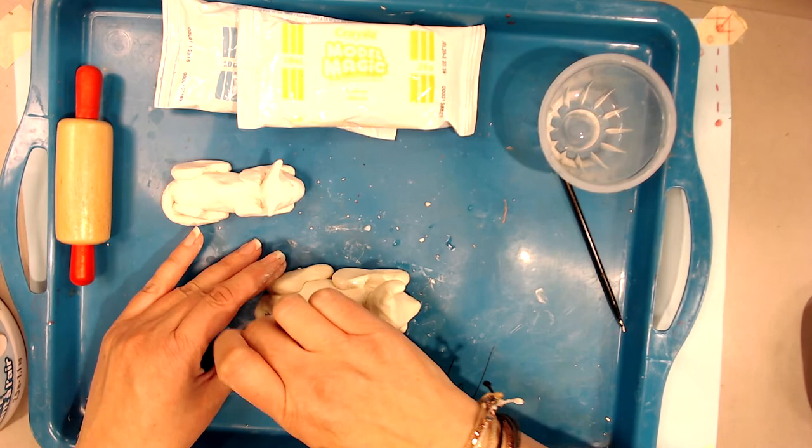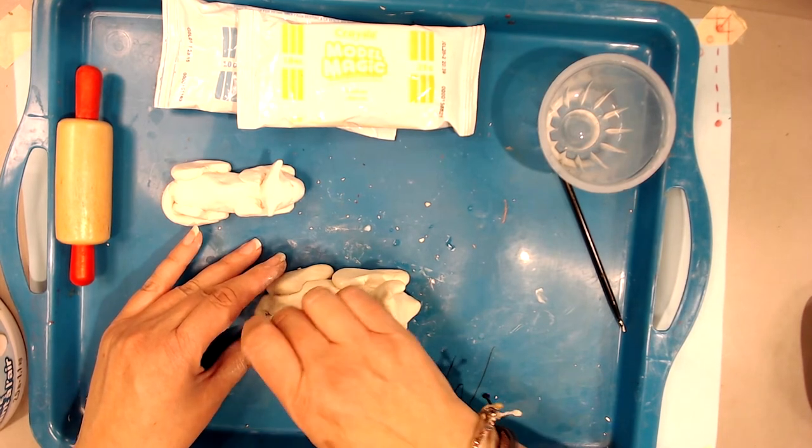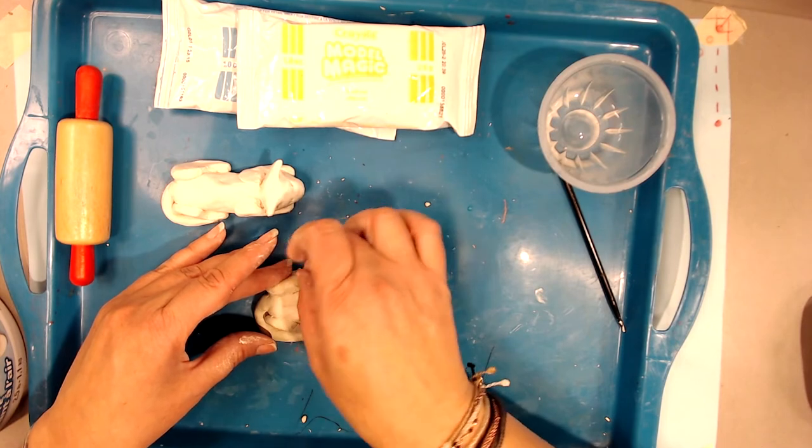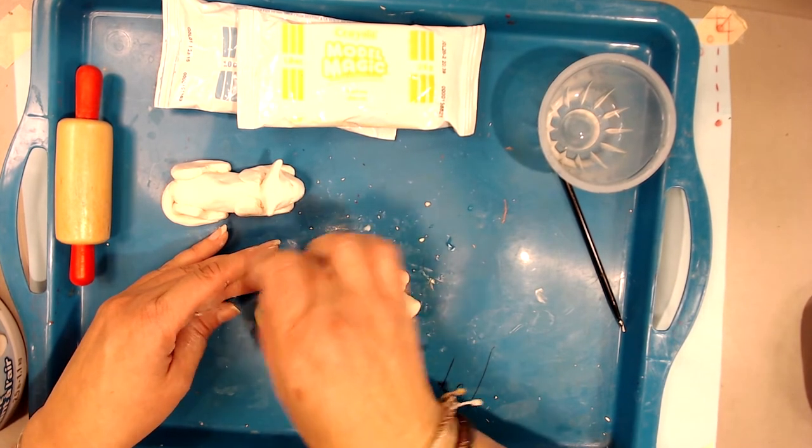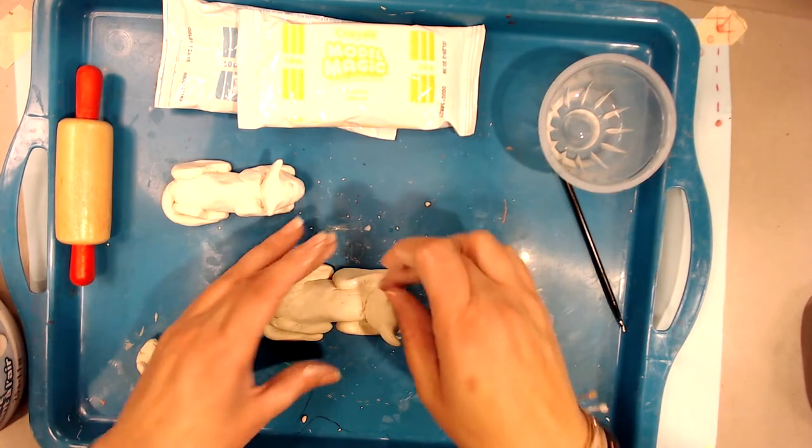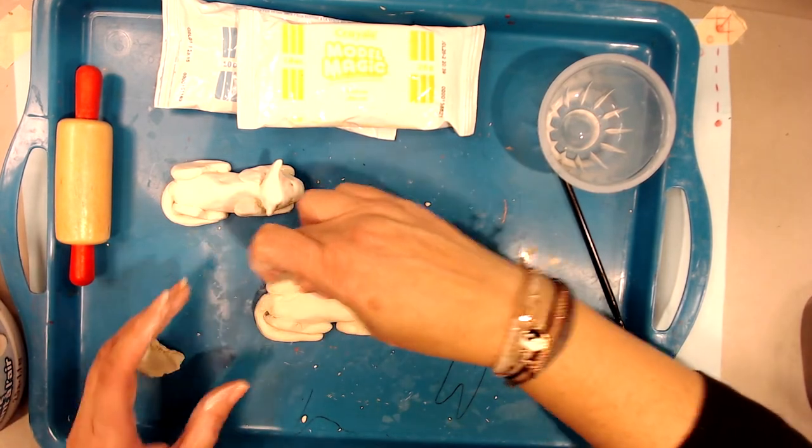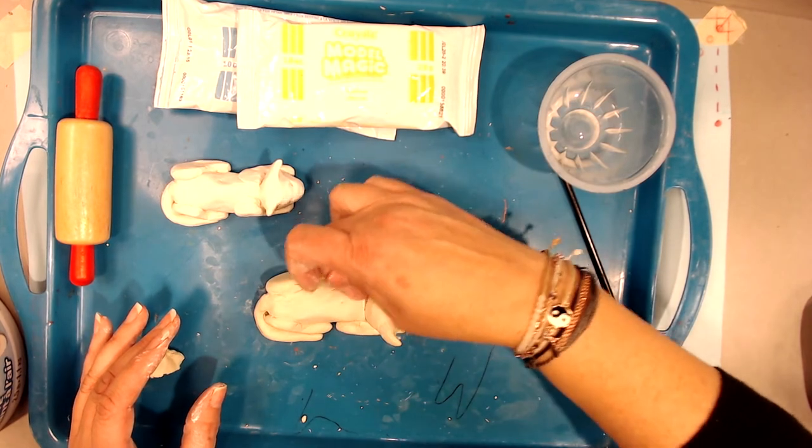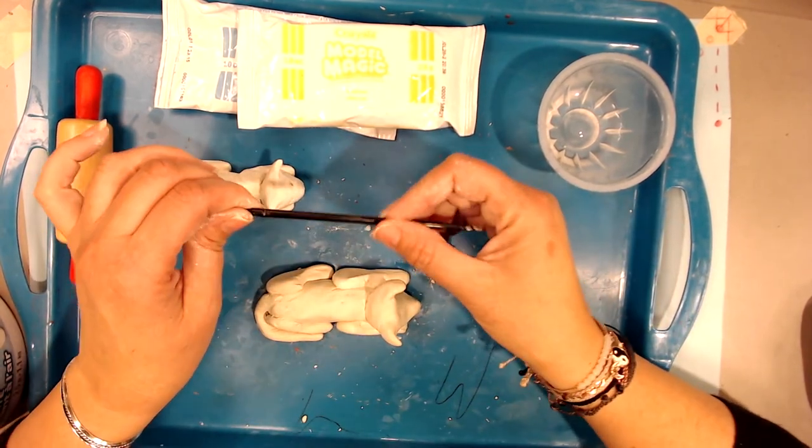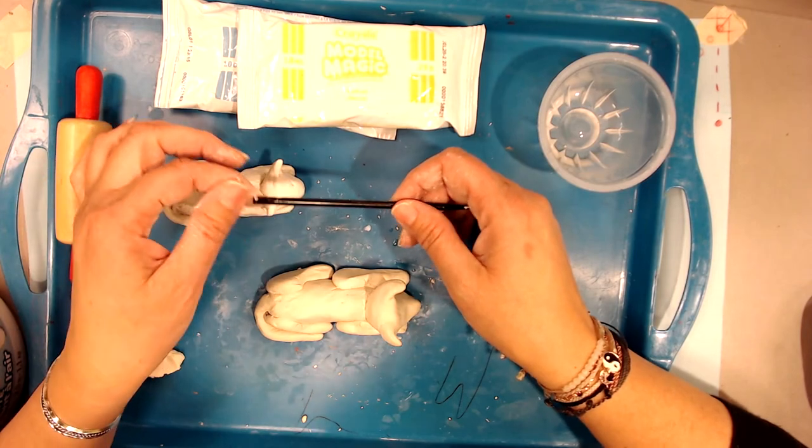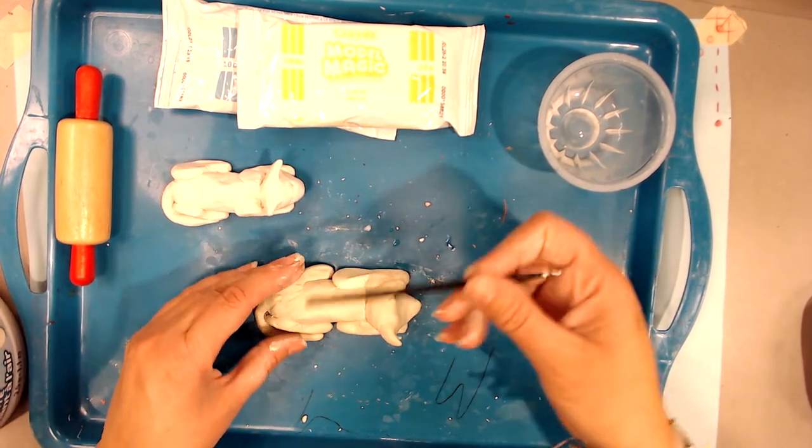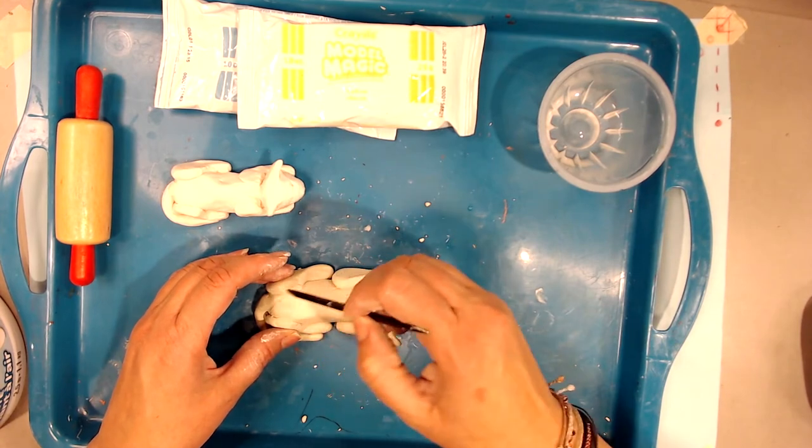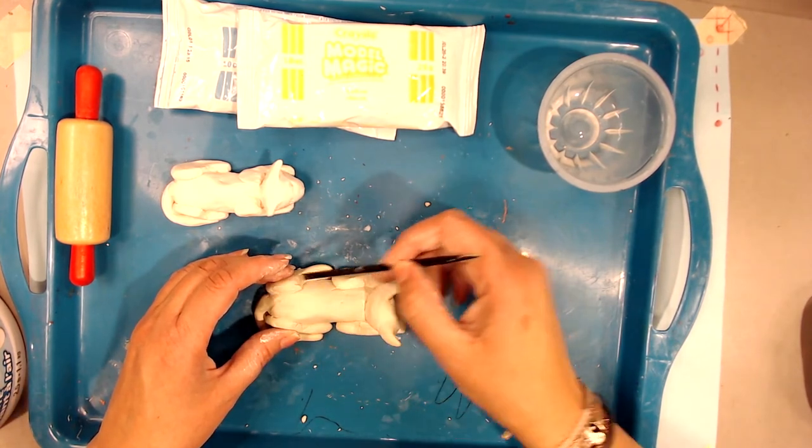Once I have him all put together, I'm going to go back and smooth any of the joints together to make sure that he's not going to break apart when he's dry. If there's any cracks or blemishes in the clay, I like to use the back of my fingernail. You could use a popsicle stick or the scratch art stick to do some of that smoothing. I think my hands are the best clay tool.